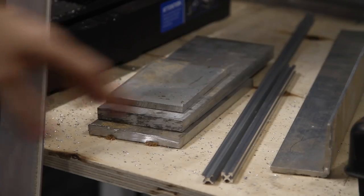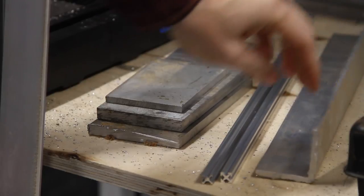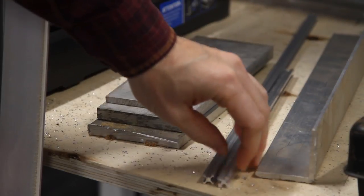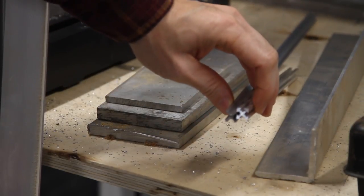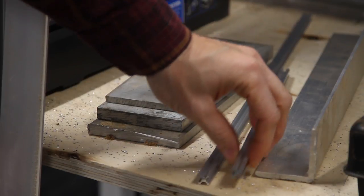We've got some typical aluminum angle iron, these hobbyist extrusions—this is maker beam and this is micro racks—and then we've got aluminum flat stock.